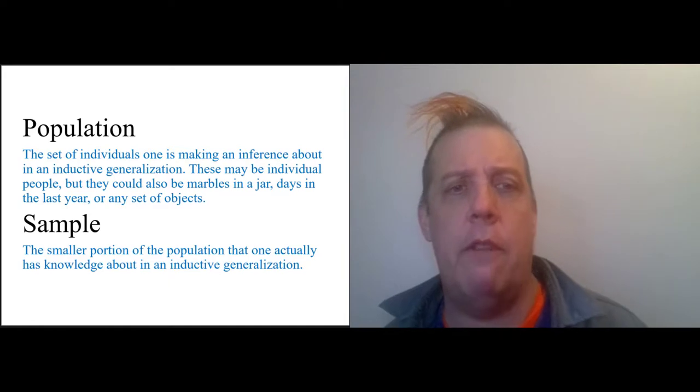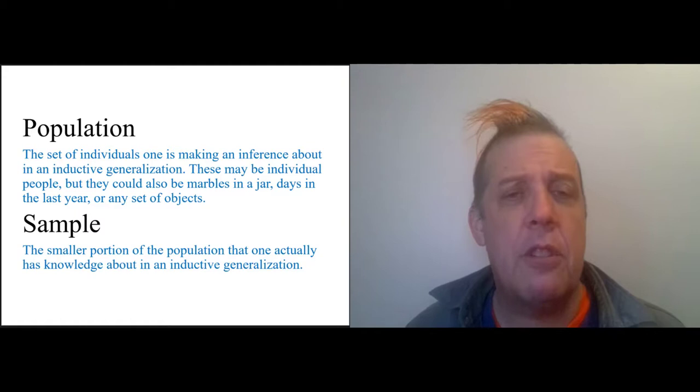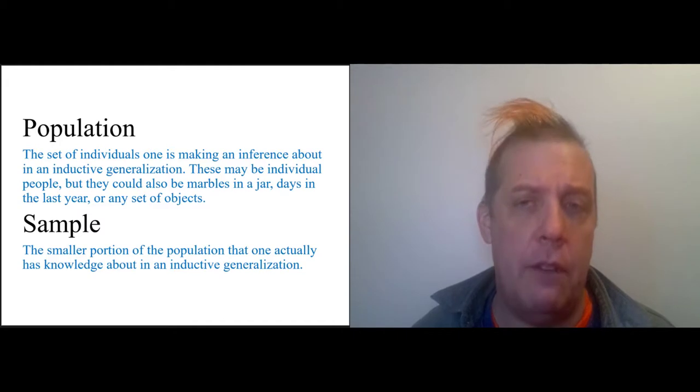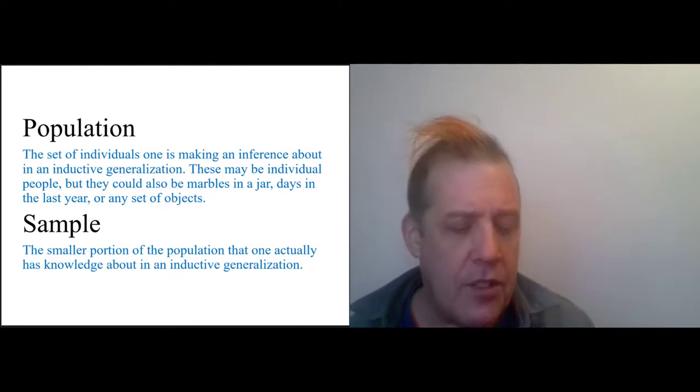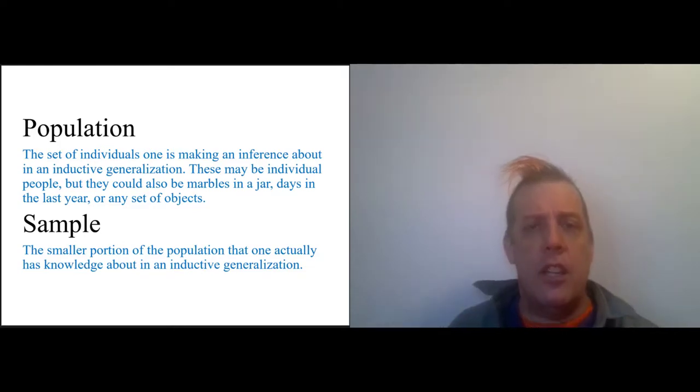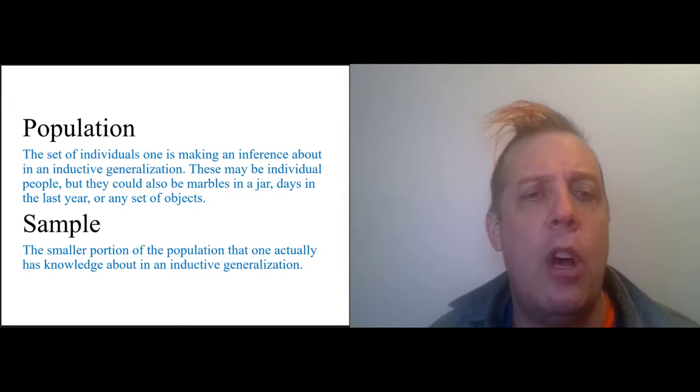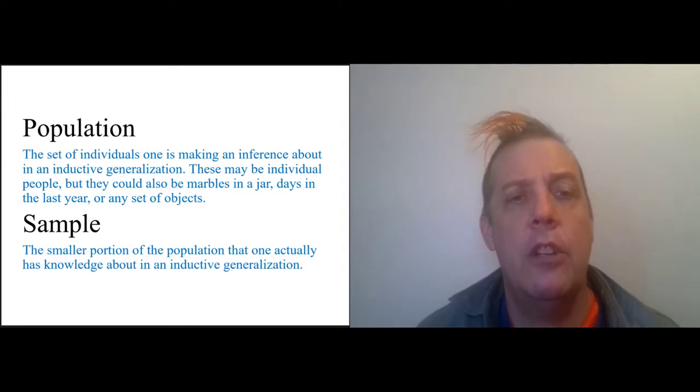But more generally, there's a population that you want to know about—this is a large group of people—and then there's the sample, which is the smaller portion of the population that you actually have knowledge of. So one of the key things to understanding statistical reasoning is to pay attention to how the sample is drawn out of the population. You're never looking at the whole world, you're just looking at some sample of it.